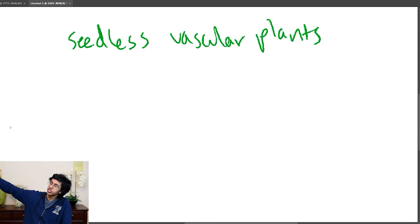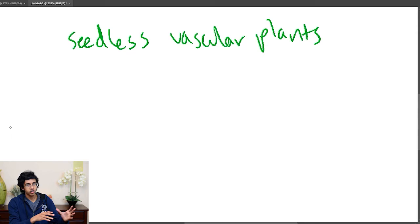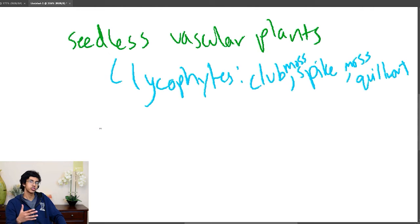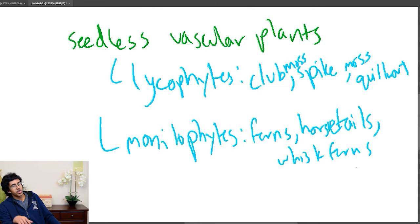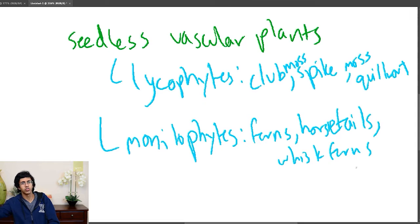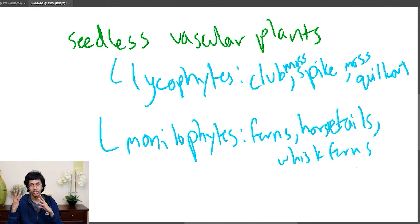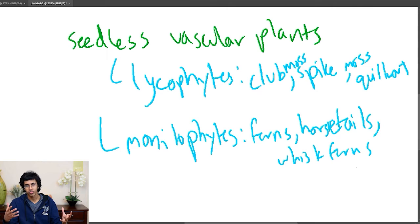Now moving past the non-vascular plants, you go to the seedless vascular plants. The way to remember the progression: you start with non-vascular, then go to vascular, but we don't have seeds yet, so we're at seedless vascular. This is slightly less complicated because we only have two phyla at this point - the lycophytes, and then the monilophytes. The seedless vascular category is a little more complicated to remember because who's supposed to know what a lycophyte is?